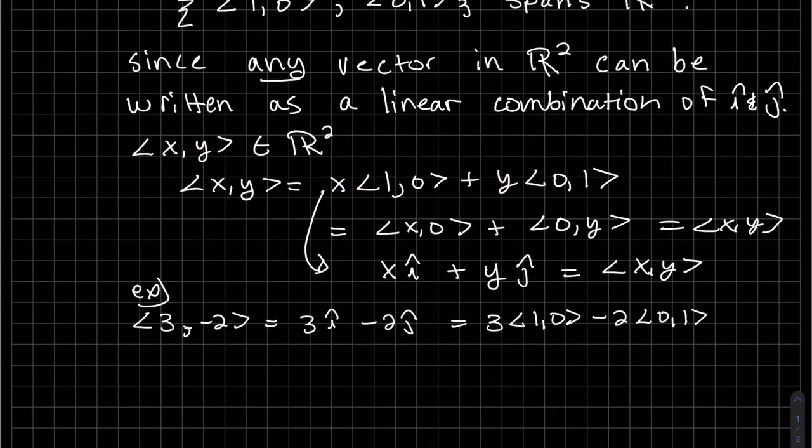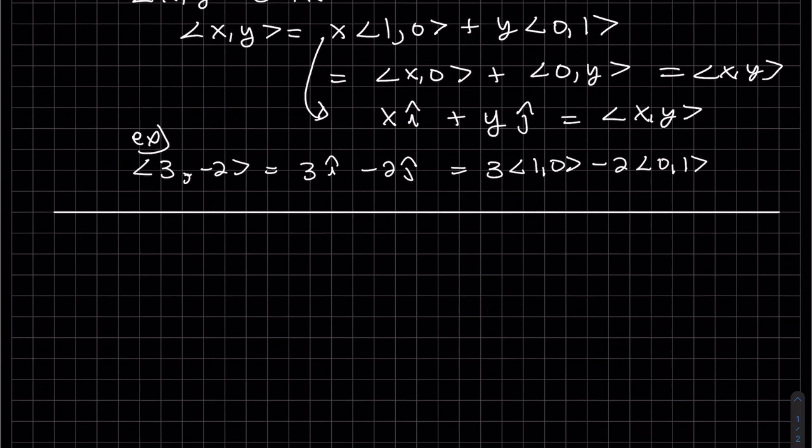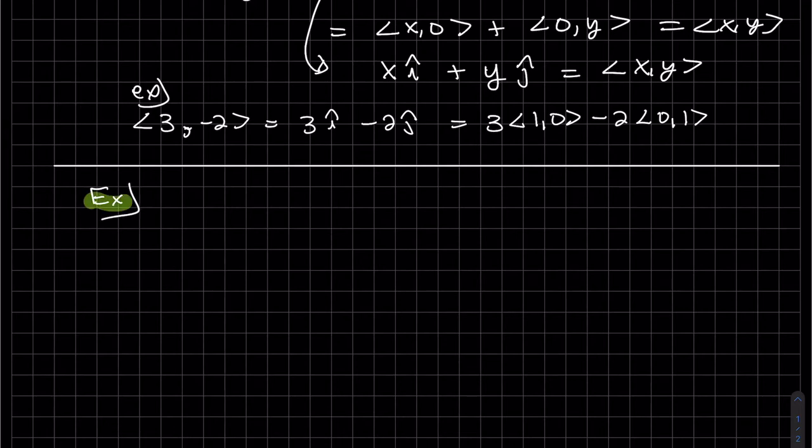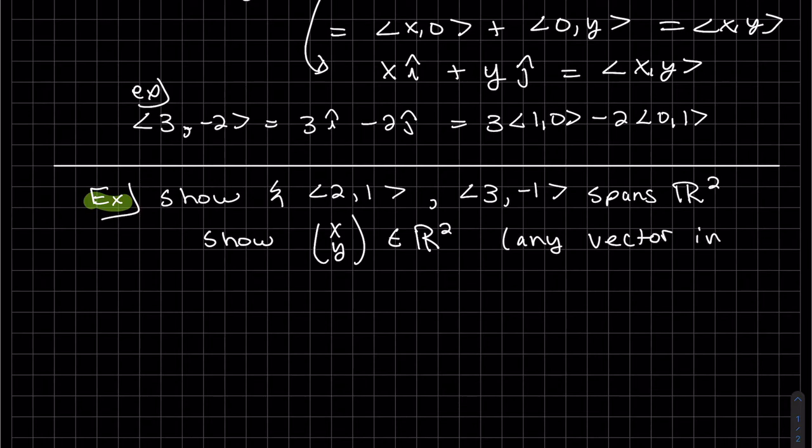Okay, now let's do another example that's a little bit harder, but the setup is important. Show that these two vectors span R². So what we have to do, I'm going to go to column notation.